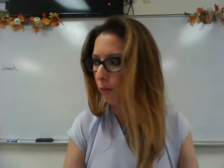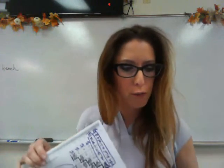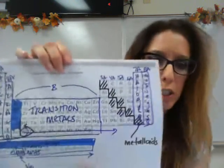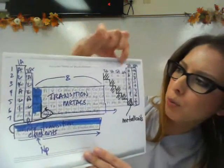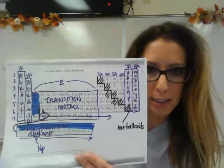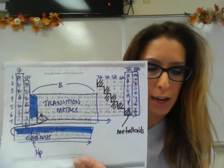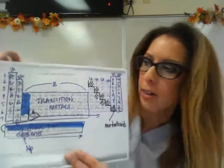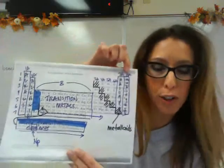We care about valence electrons because they have to do with bonding. Here's a trick for figuring out valence electrons using the periodic table. If you're looking at anything with an A above its group, look at the number in front of the A — that tells you how many valence electrons it has. So anything in 1A has 1, 2A has 2, 3A has 3, and so on, all the way over to 8A.